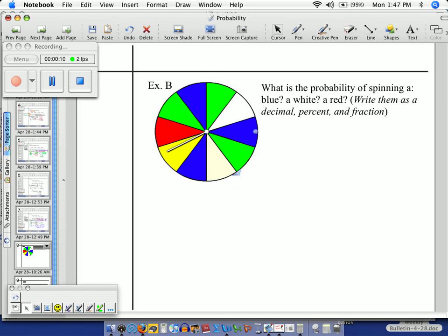What we want to know is what is the probability of the spinner landing on blue first? So let me write this down: the probability, capital P, of landing on blue.